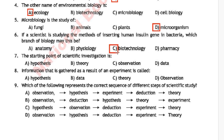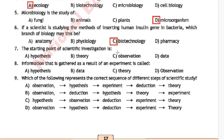MCQ number 7: the starting point of scientific investigation is — option A: hypothesis, option B: theory, option C: observation, option D: data. The correct answer is option C, observation.